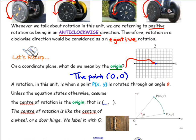A rotation in this unit is when a point P(x, y) — basically a coordinate on the original object — is rotated through an angle of theta. Unless the equation states otherwise, assume the center of rotation is the origin. The origin is (0, 0). So unless the question states otherwise, assume the center of rotation is at the origin.